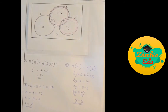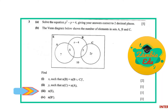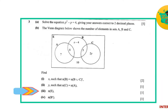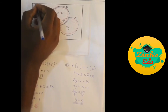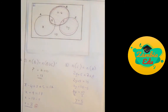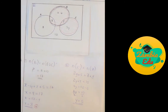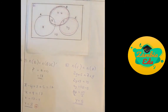Our third part of that question says: find the numbers in E — the universal set. To find the numbers in the universal set, you simply add up everything you have.